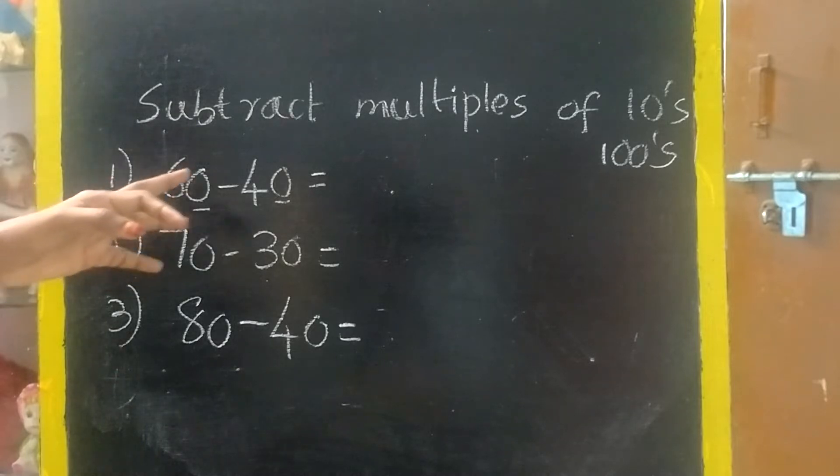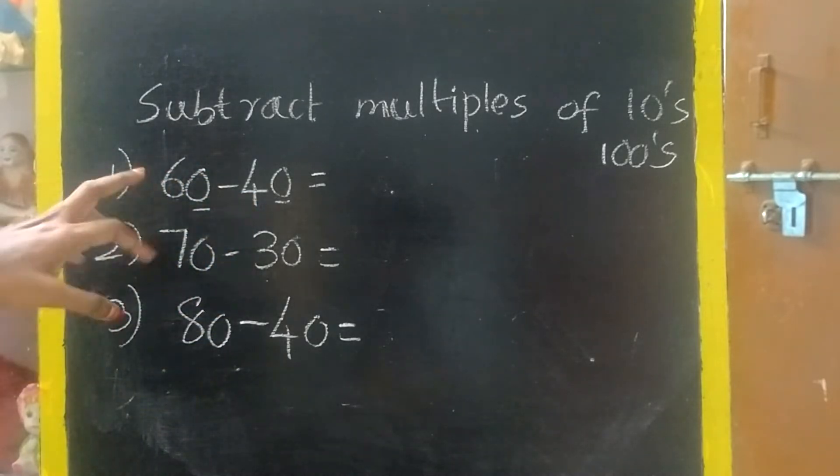Tens means it should be like 10 table: 10, 20, 30, 40, 50. You can see 60, 40, 70, 30 like that.